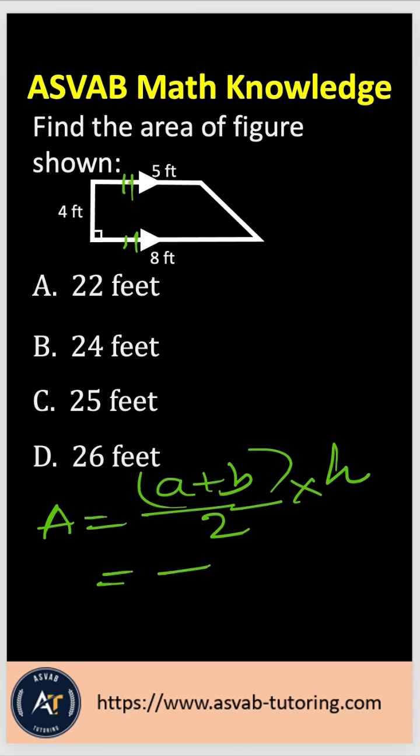Here A and B are the parallel sides. So you could write this as A, this as B. If you plug the value, that gives you 8 plus 5 over 2 times 4.